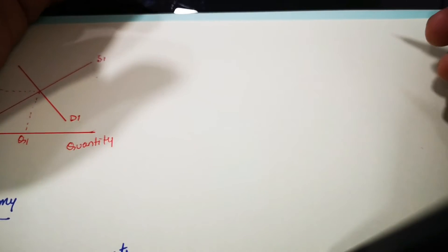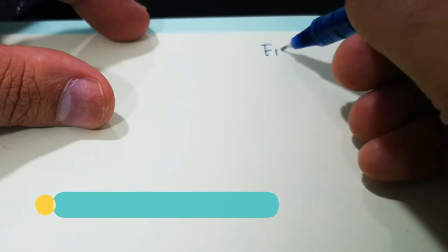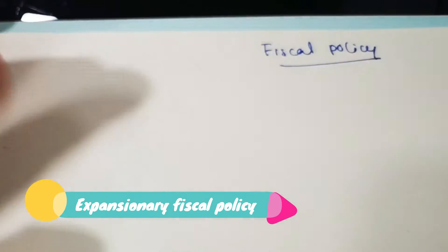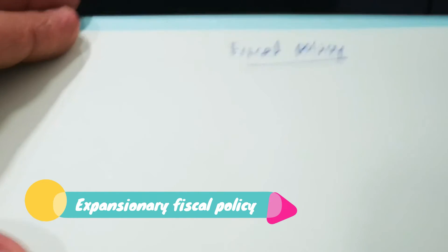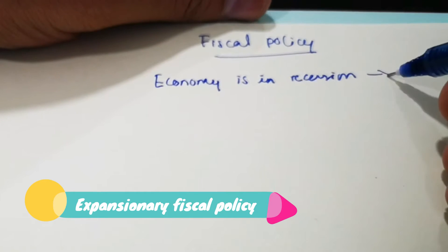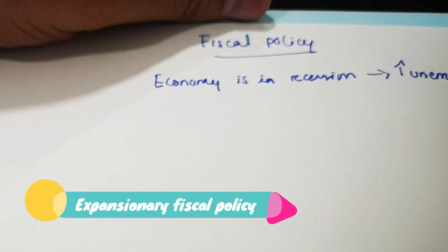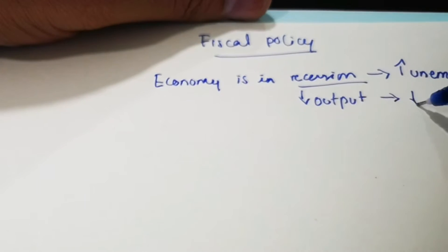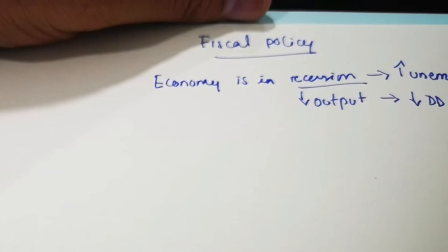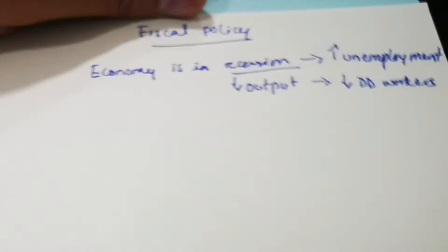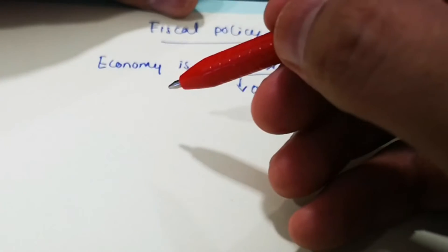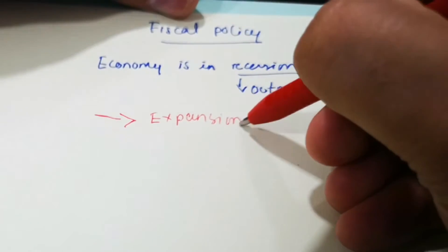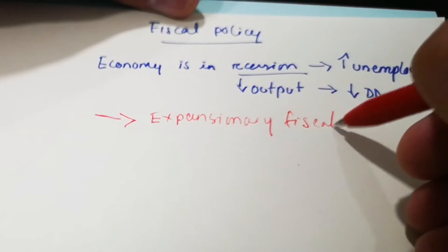Now we will try to implement this diagram in fiscal policy and see how fiscal policy works — the effect of fiscal policy using this aggregate demand and supply diagram. Let's take a scenario: let's say the economy is in recession. When the economy is in recession, there is usually going to be high unemployment, because there are low levels of output. Low levels of output means low demand for workers, and therefore high unemployment. In this scenario, what is the right fiscal policy? The right fiscal policy is going to be expansionary fiscal policy.